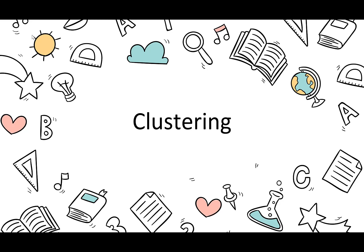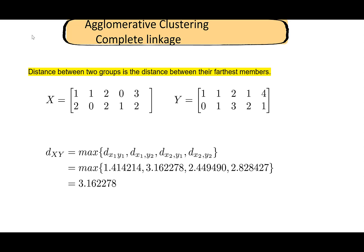In this video on clustering, we will look at some other types of agglomerative methods. Remember, agglomerative methods are a kind of hierarchical clustering method. We'll look at a method called complete linkage. The difference between complete linkage and single linkage is basically how the distance between two groups is calculated. For complete linkage, the distance between two groups is the distance between their farthest members; for single linkage it was the distance between the closest members.